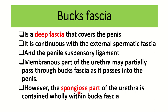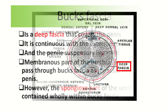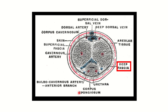Now let's look at some pictures. Here we can see a cross-section of the penis showing different structures. Among them, the deep fascia is present and it covers all of the structures, including the corpus cavernosum and corpus spongiosus, which are fully covered by the deep fascia.